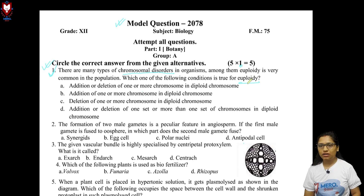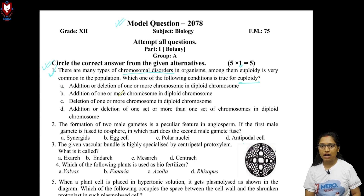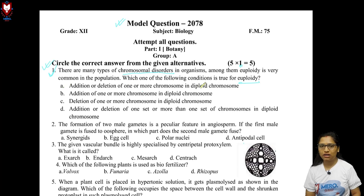In aneuploidy, there is addition or deletion of individual chromosomes. In euploidy, there is a whole chromosomal set deletion or addition. In aneuploidy conditions, there is an addition or deletion of one or more chromosomes in the diploid chromosome set.